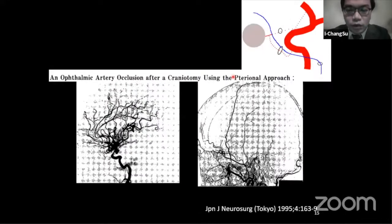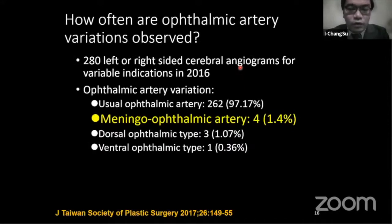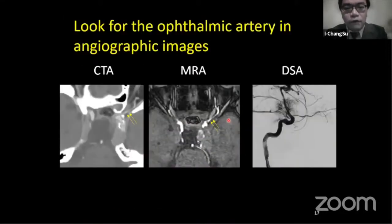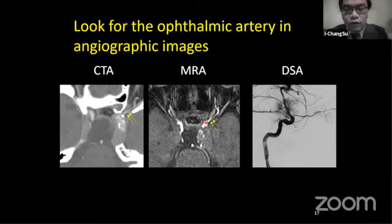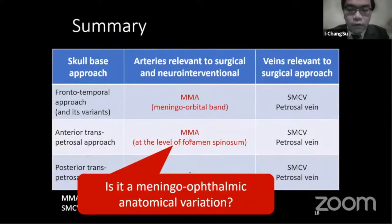This potential complication has already been published previously. The author reported that the reason for blindness was because the patient's eye was supplied by the meningoophthalmic artery, and this artery was sacrificed during the meningoorbital band detachment in a pterional approach. In our previous angiography screening, we found that this kind of meningoophthalmic artery variation is not that infrequent. Therefore, please carefully look at the vascular images. If you can identify the ophthalmic artery passing through the optic canal, it is safe. But if not, it is better to perform angiography to confirm where the ocular artery comes from. If you prove that the patient has a meningoophthalmic variant, frontal temporal approaches involving anterior clinoidectomy and the anterior transpetrosal approach will probably carry risk of visual loss.